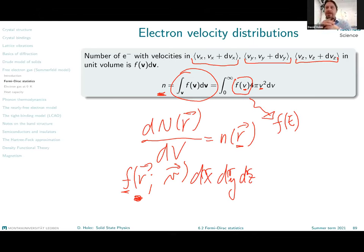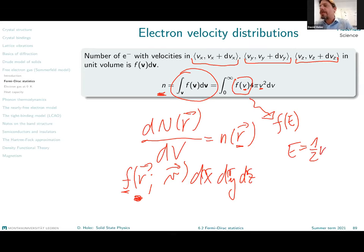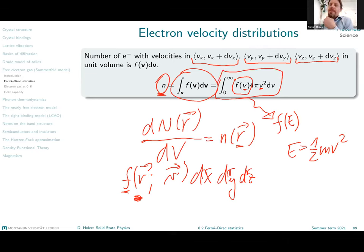We are interested in this because eventually we want to translate this into a function which depends on the energy of a particle. We know that for free electrons — those that do not experience any potential or interaction, which was the framework set by the Drude model — the energy is simply their kinetic energy, one-half mv squared.